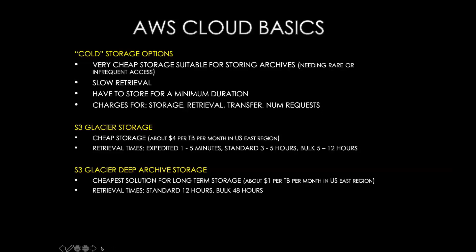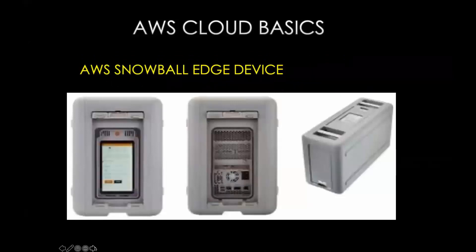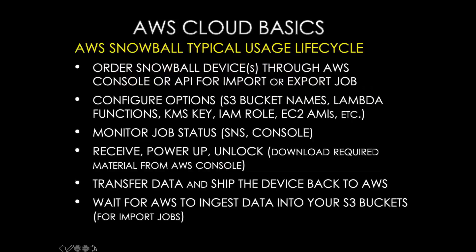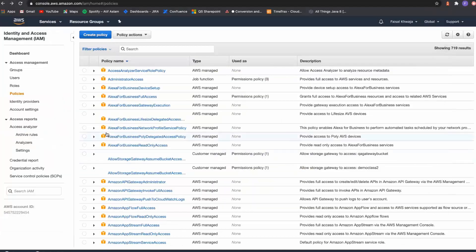Snowball: if you have a large dataset sitting on your premises and want to migrate it to AWS, you can transfer it using physical devices called Snowball devices. You get them from AWS, put them in your data center, pipe the data into them, and then ship them for a quick upload to AWS. If you have zillions of terabytes of data, using Snowball is the smart and effective way to migrate.